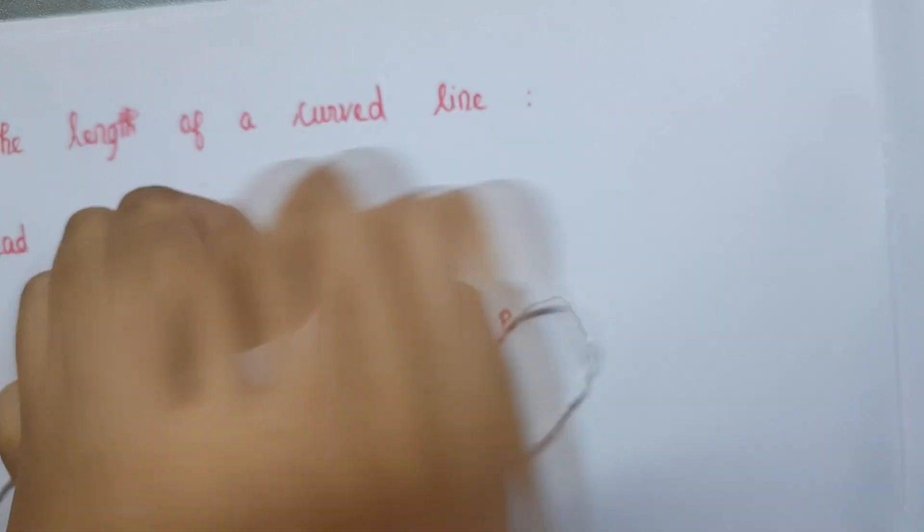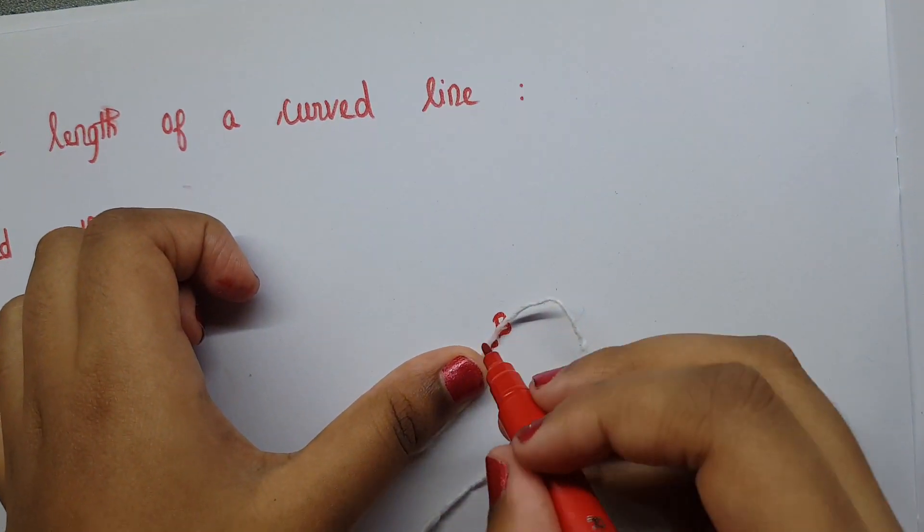Put a mark at the point where the thread touches the other end of the curved line.